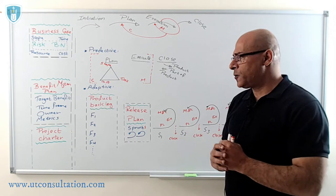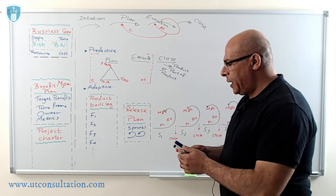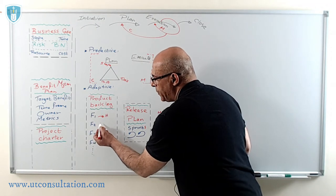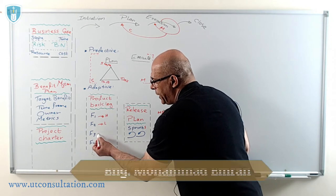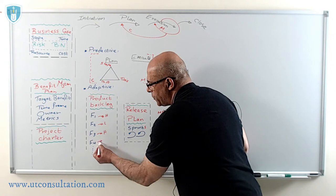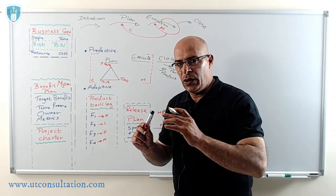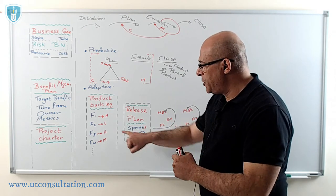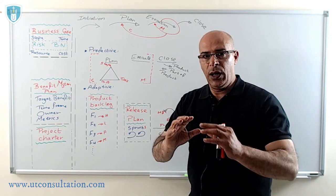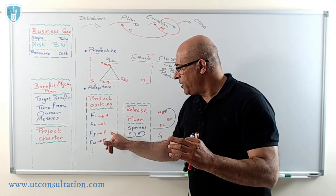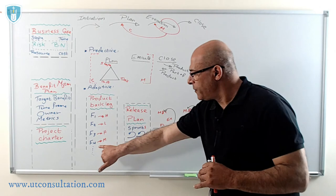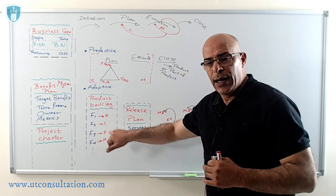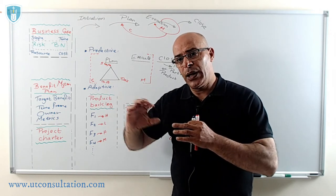To simplify: after doing prioritization, suppose feature 1 is the highest priority (high), feature 2 is low, feature 3 is high, feature 4 is medium. There will be three sprints. Sprint 1 will produce the high-priority items: feature 1 and feature 3. Sprint 2 will work on feature 4 (medium). Sprint 3 will work on feature 2 (low). You are producing the product based on business value — the highest business value features are delivered first.